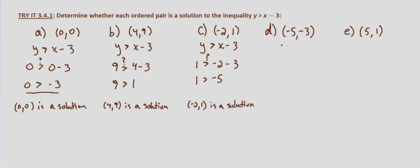(-5,-3). Again, same process. Write down our inequality, then substitute the given values. So we want to know: Is negative 3 greater than negative 5 minus 3? Negative 3 is greater than negative 8. Again, that's a true statement. So (-5,-3) is a solution.